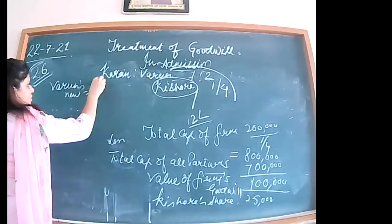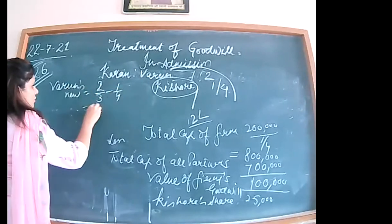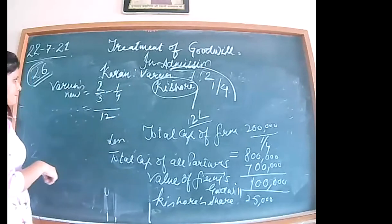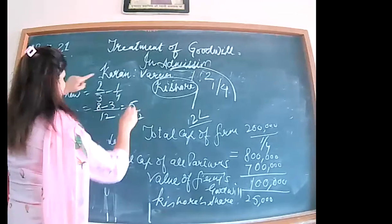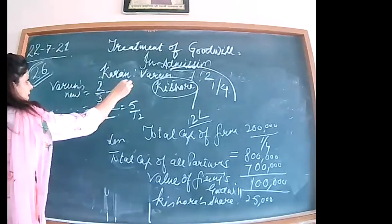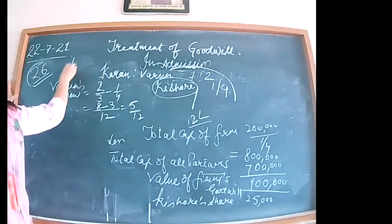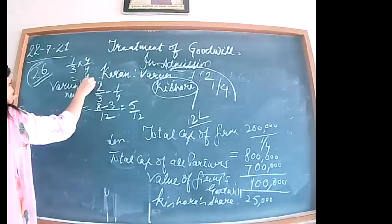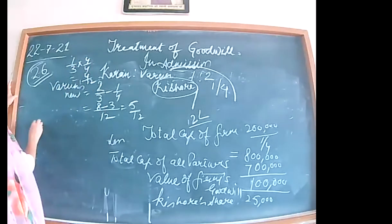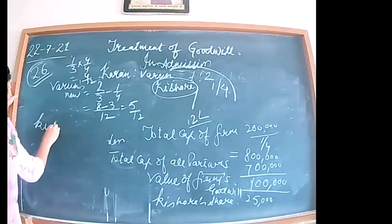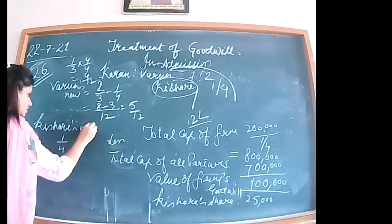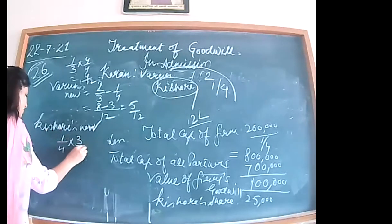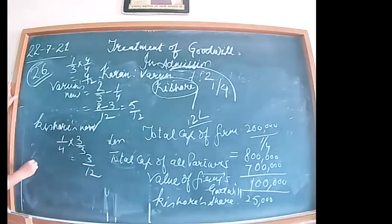Varun's new share = 2/3 minus 1/4 = 8/12 minus 3/12 = 5/12. Karan's new share = 1/3, converted to 4/12. Kishore's new share = 1/4, converted to 3/12. So the new profit sharing ratio is 4 is to 5 is to 3. Kishore's share of goodwill is 25,000, which matches the calculation.